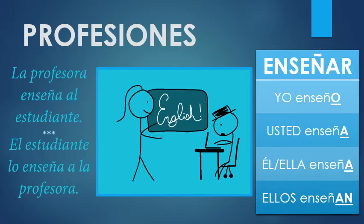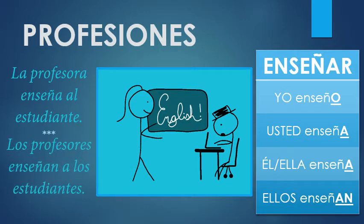So you can also have a sentence like this. El estudiante lo enseña a la profesora. Lo means it. So lo for masculine things, la for feminine things. The student shows it to the professor. We're gonna focus on the teaching one, but keep it in the back of your mind that this word has two different meanings. So I'll say that one more time. El estudiante lo enseña a la profesora.